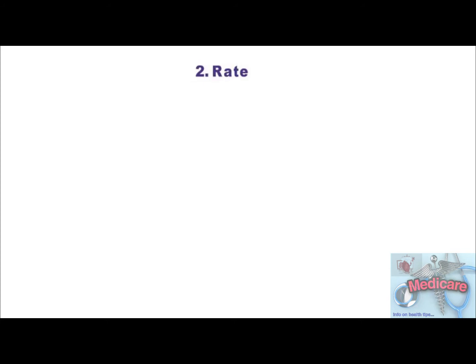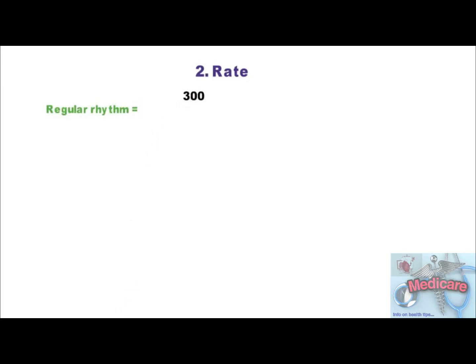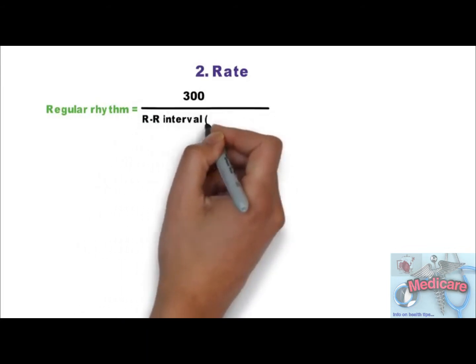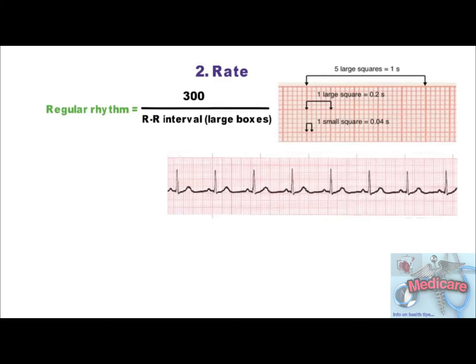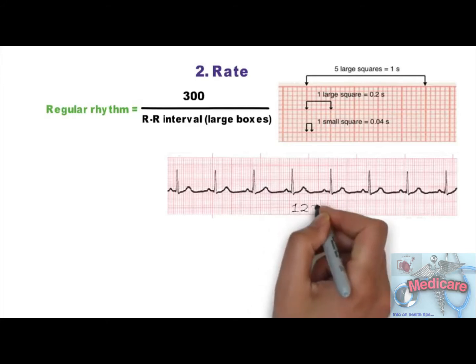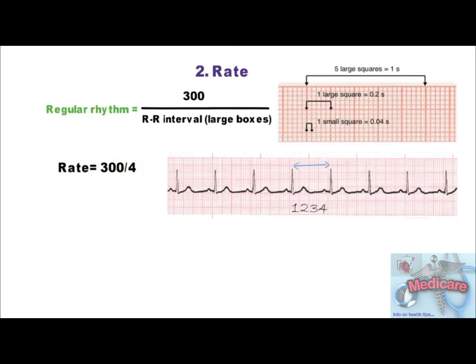Step 2 is to calculate heart rate from an ECG. If the rhythm is regular, heart rate is calculated by 300 divided by the number of large boxes between the RR interval. On ECG graph paper, if the machine speed is 25 mm per second, then 1 small square corresponds to 0.04 seconds and 1 big square to 0.2 seconds, so 5 large squares equals 1 second. In this normal sinus rhythm ECG, there are 4 large boxes between RR interval, so the rate is 300 divided by 4, which equals 75 beats per minute.